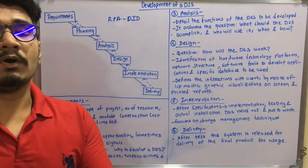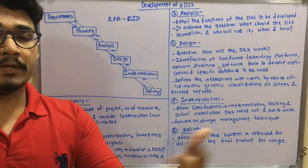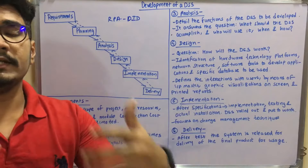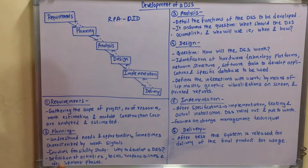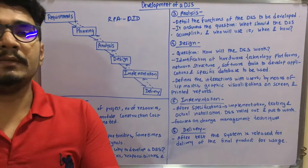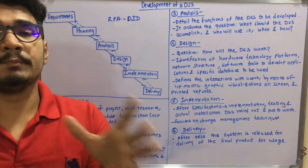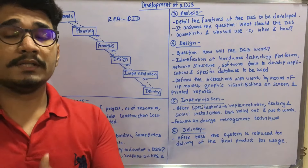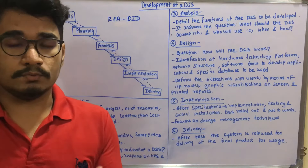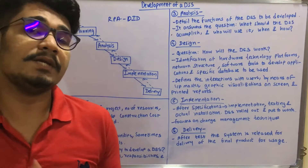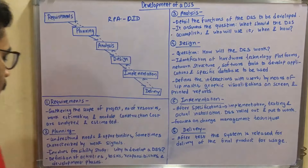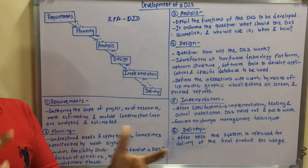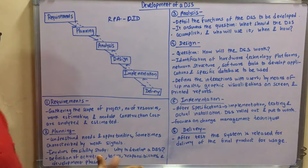Then after that you have the Planning phase. Planning is very much required — as we saw in BI development phases, planning is required in each and every phase. Here we understand the needs, requirements, and opportunities, sometimes characterized by weak signals — identifying weak points, possible errors, and things that might go wrong. Those weak signals are identified and improvised over a period of time. It also involves a feasibility study that answers the question: why do you need to develop a DSS for your application or organization?